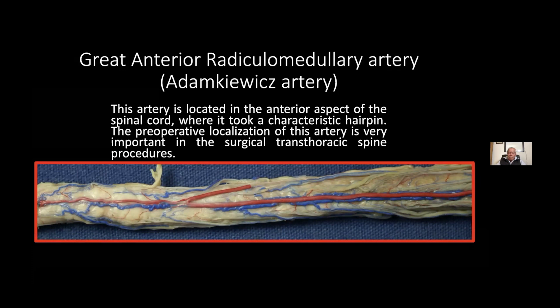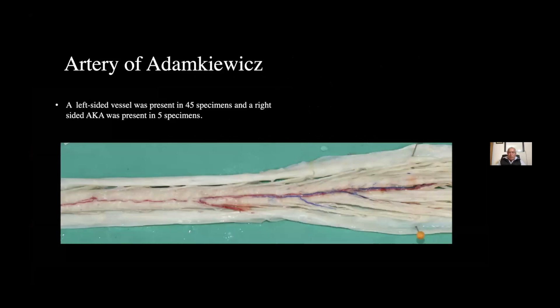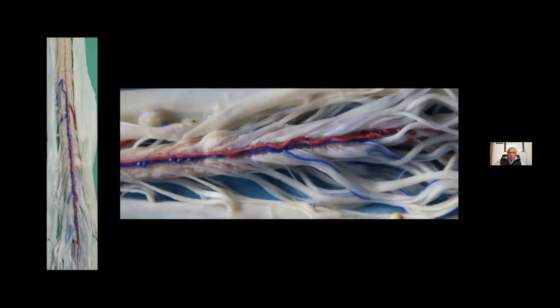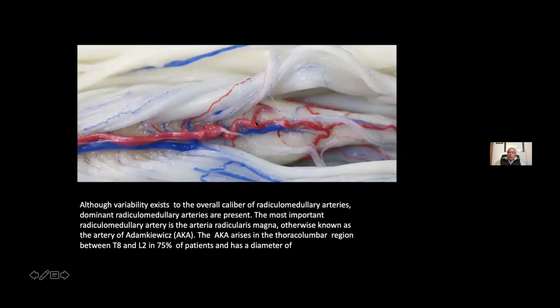This is a close view. We have several features of these arteries. This is a left-sided vessel, present in 45 specimens. The right-sided was present in only five specimens from 50 spinal cords studied. Here we have a picture of the anterior aspect of this spinal cord. You can see this Adamkiewicz artery. In the conus medullaris, this artery is giving rise to three arteries.